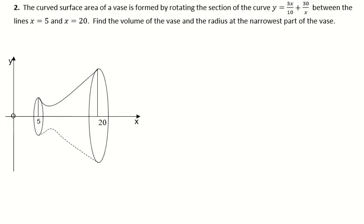Okay, this example says the curved surface area of the vase is formed by rotating this section of the curve, y is equal to 3x over 10 plus 30 over x between the lines x equals 5 and x equals 20. Find the volume of the vase and the radius at the narrowest part of the vase.